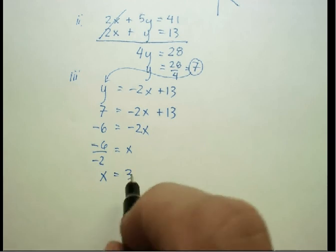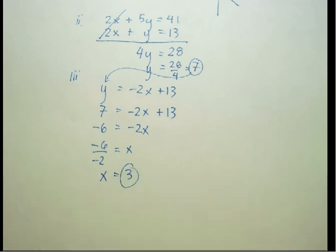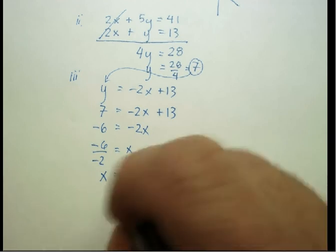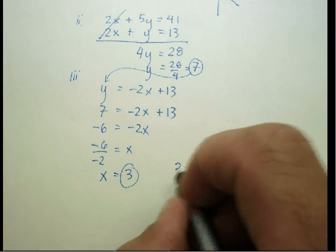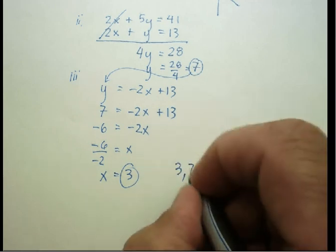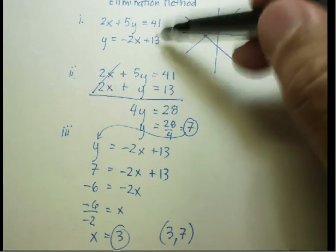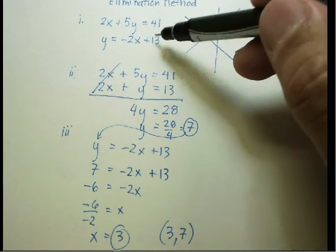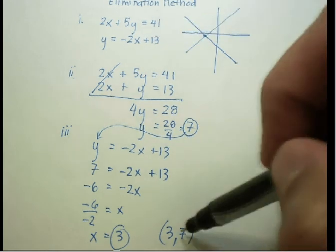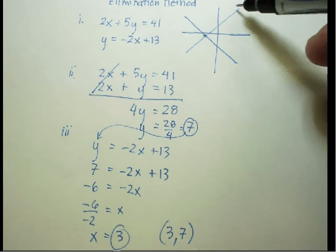And there is my answer. According to this solution, the x value is 3, the y value is 7. What that says is these two lines will intersect at the point 3, 7. And it's going to be the solution to this system.